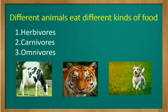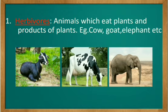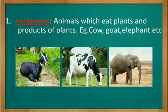I have put three pictures — one is a cow, tiger and a dog. Herbivores are animals which eat plants and products of plants. Examples: cow, goat, elephant, etc. These animals do not eat flesh. What do you mean by products of plants? That means fruits, vegetables and nuts which are given by plants. To tell you in a simple way, they are vegetarian animals. See the pictures of a cow, goat and an elephant — these are a few examples of herbivore animals.